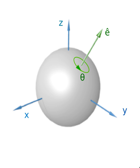Mathematically, a rotation is a map. All rotations about a fixed point form a group under composition called the rotation group of a particular space.